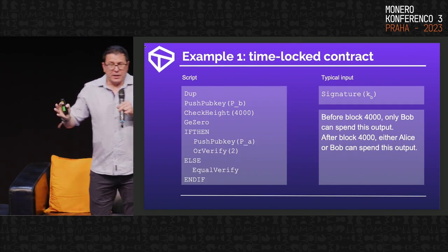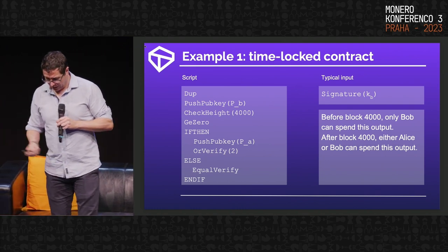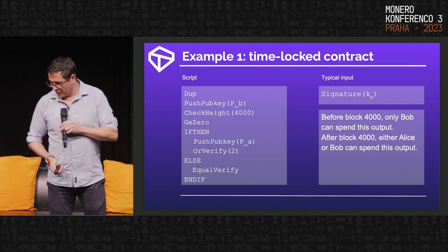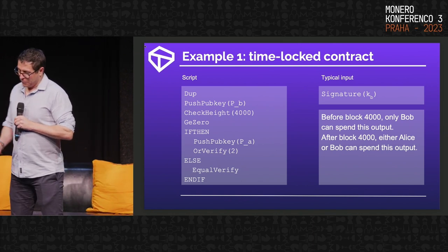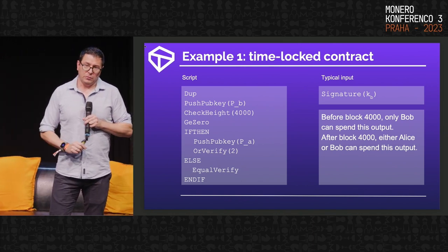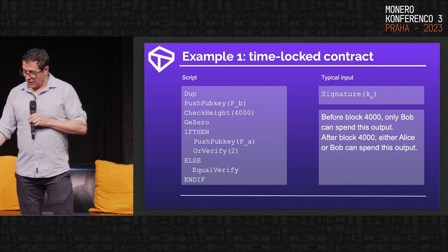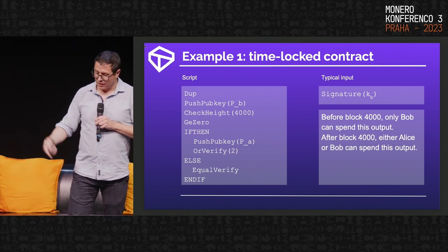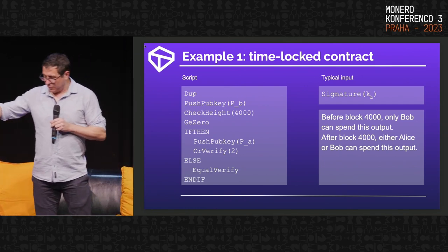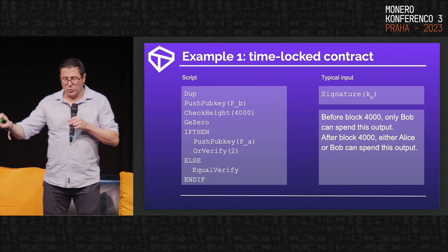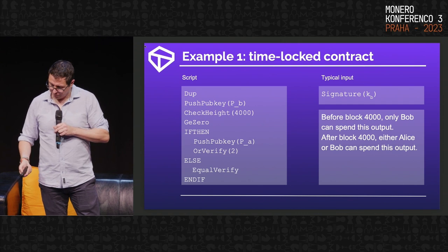You can do even funkier things, like atomic swaps. This script says: before block 4000, only Bob's public key is pushed onto the stack; after block 4000, either Alice's or Bob's public key is left on the stack. So up until block 4000, only Bob can spend. Beyond block 4000, either Alice or Bob can spend, allowing Alice to get her funds back in case of a failed atomic swap.